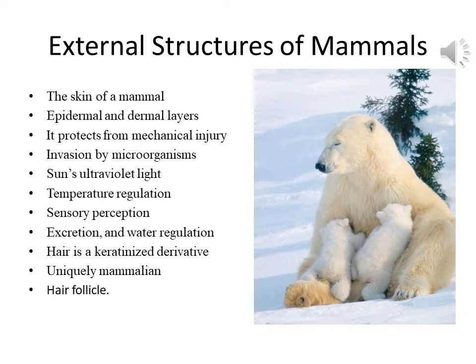The skin of mammals, like that of other vertebrates, consists of epidermal and dermal layers. It protects from mechanical injury, invasions by microorganisms, and the sun's ultraviolet light. Skin is also important in temperature regulation, sensory perception, excretion, and water regulation. In mammals, hair is a keratinized derivative of the epidermis of the skin and it is uniquely mammalian.